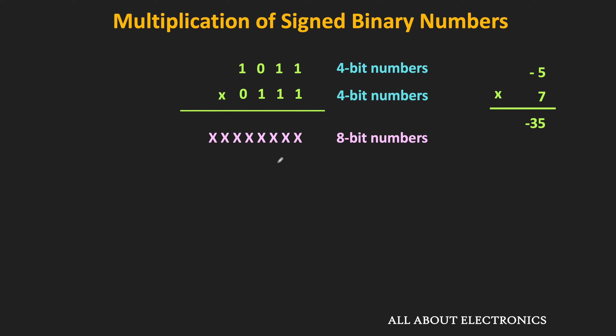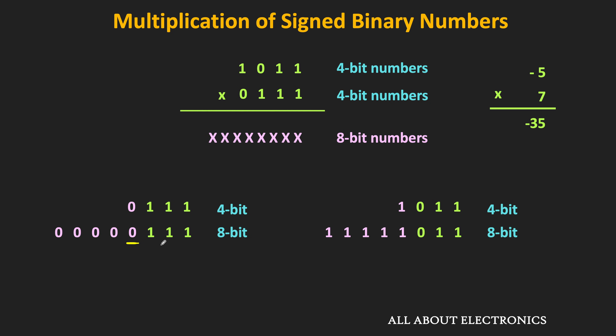For example, representing 0111 in 8-bit form means extending the MSB sign bit up to 8 bits, and the value remains the same. Similarly for -5: in 2's complement form it is 1011, and in 8-bit form it becomes 11111011. During multiplication, we will extend the sign bit of each partial product up to 8 bits, while the remaining multiplication procedure stays the same.